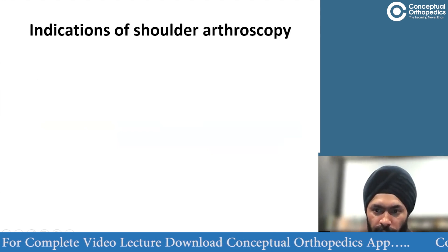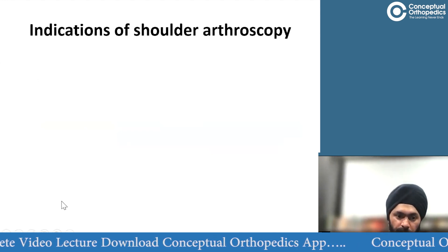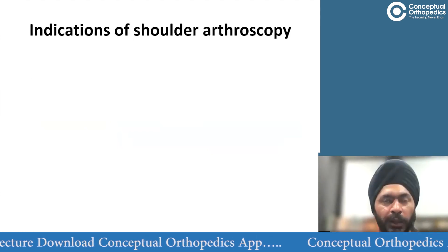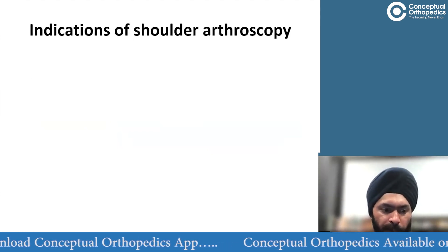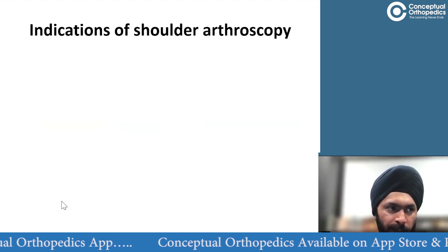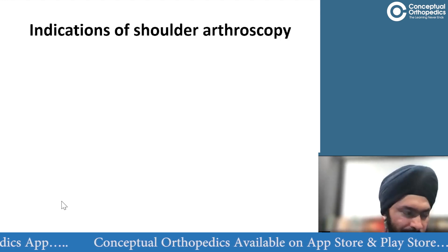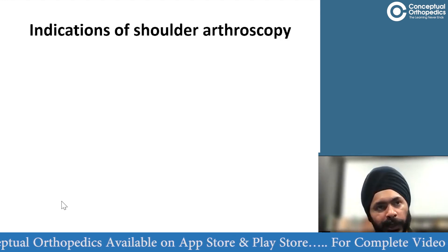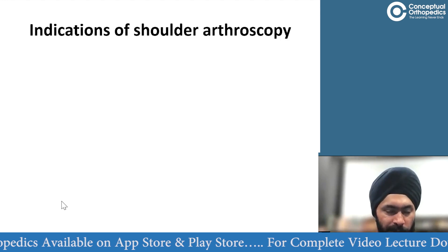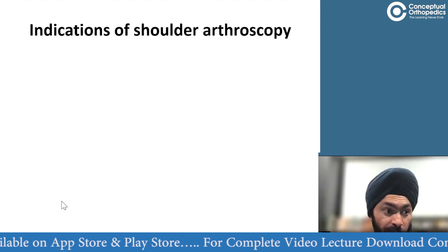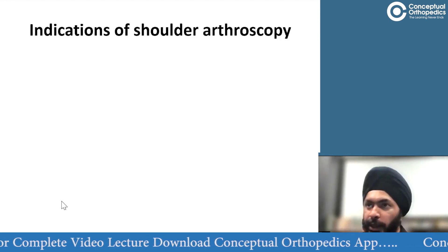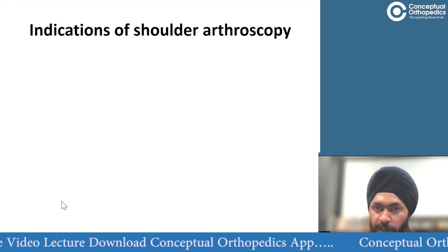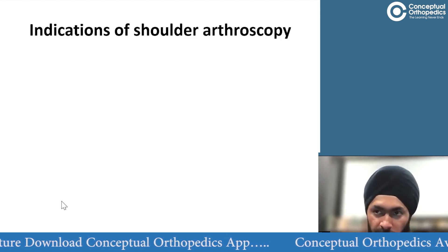When do you need to do a shoulder arthroscopy? Indications include diagnostic and therapeutic purposes. With MRI, CT, and other imaging, diagnostic arthroscopy is much less common, so it is mainly therapeutic — for treatment of instability, SLAP tears, labral injuries, rotator cuff tears, adhesive capsulitis, and various other shoulder pathologies. The two main broad indications are treatment of labral pathologies and treatment of cuff pathologies.